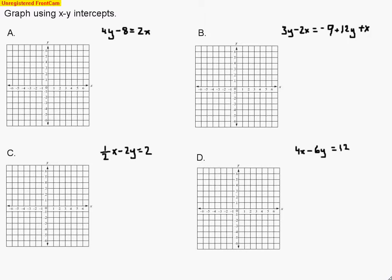We're going to spend another day graphing lines using x and y intercepts. The first thing we want to do is figure out what our two intercepts are. Looking at this first one, I see that 4y minus 8 equals 2x. When dealing with intercepts, we want all variables on one side, so I'm going to move 4y back to the other side so I can set each variable equal to zero.